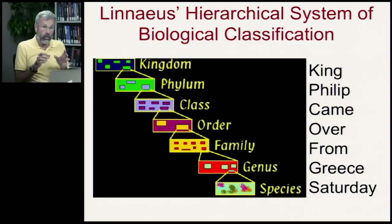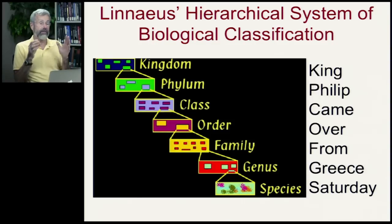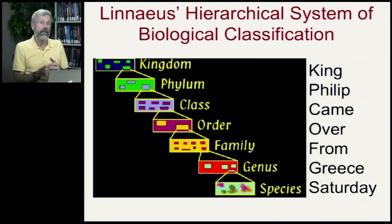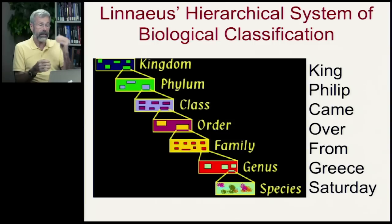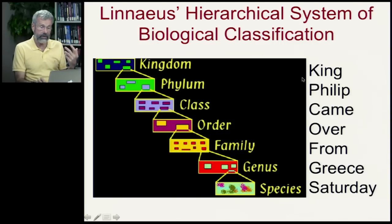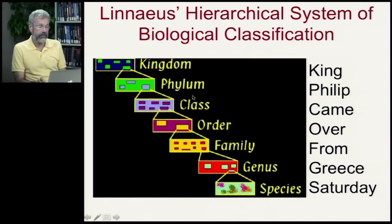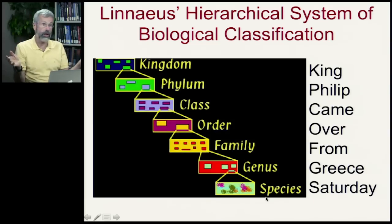This is one of the few things I really want people to memorize in this course, so that you have a sense of this hierarchical classification system. A useful way to memorize these rankings is: King Philip came over from Greece Saturday — Kingdom, Phylum, Class, Order, Family, Genus, Species. That goes from the very broad general classification down to the specific.